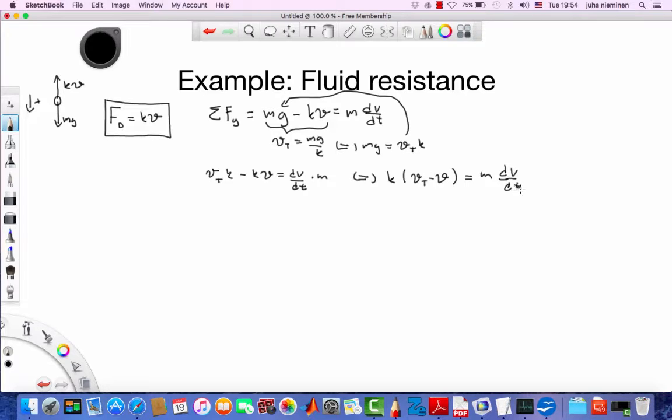So everything with the v goes on the other side and everything with t to the other side. So let's make some room here. So on the other hand, on the left hand side, we have k over m dt. And then bring those v's to the right hand side. We have dv over vt minus v.